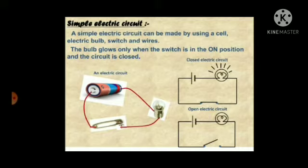A closed electrical circuit means the circuit is complete, and current only flows in a closed circuit. An open circuit means the circuit is incomplete, and current cannot flow in an open circuit.